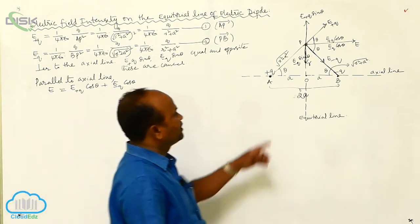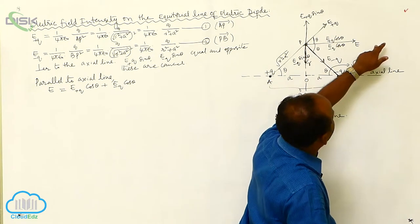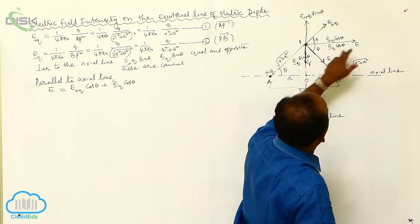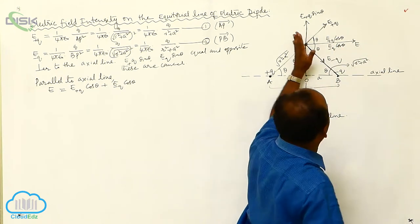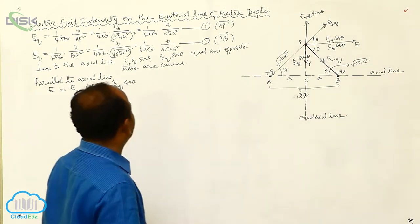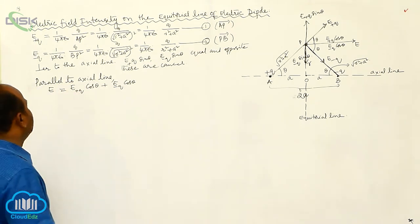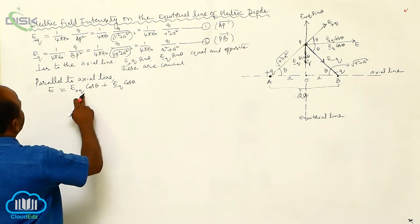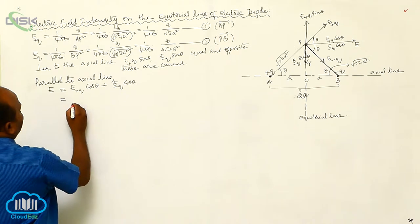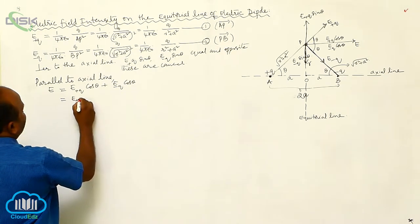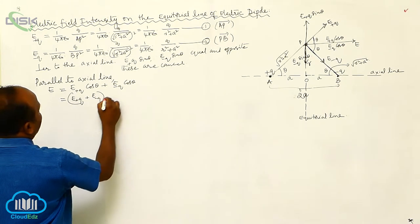Now, EF plus Q cos theta and EF minus Q cos theta are both in the same direction. Hence, the resultant E equals EF plus Q plus EF minus Q, into cos theta.